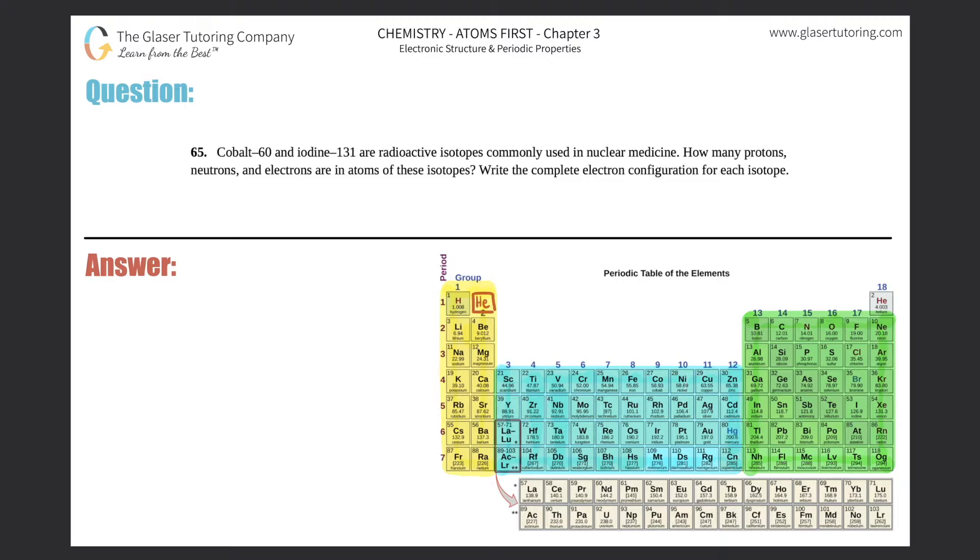Number 65. Cobalt-60 and iodine-131 are radioactive isotopes commonly used in nuclear medicine. How many protons, neutrons, and electrons are in atoms of these isotopes? And then write the complete electron configuration for each isotope. Okay, so let's work one at a time.